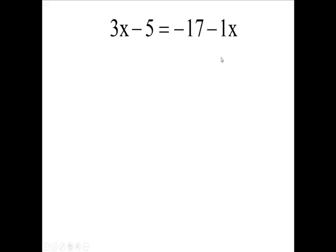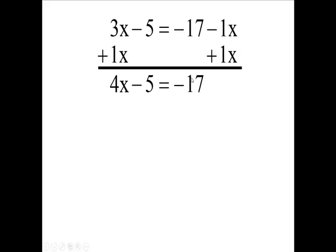So to get rid of negative 1, I will add a positive 1, the opposite. Add a positive 1 here and line it up with this one too. So now I've got 3x and 1x makes what? 3 plus 1, bring this down, bring this down, and bring this down.